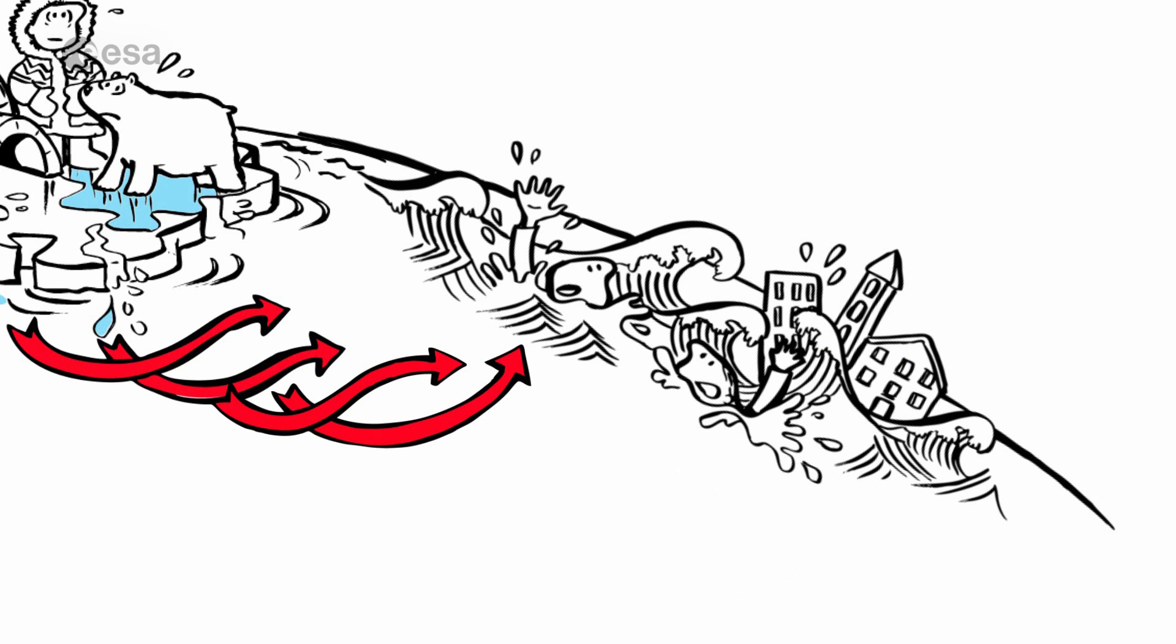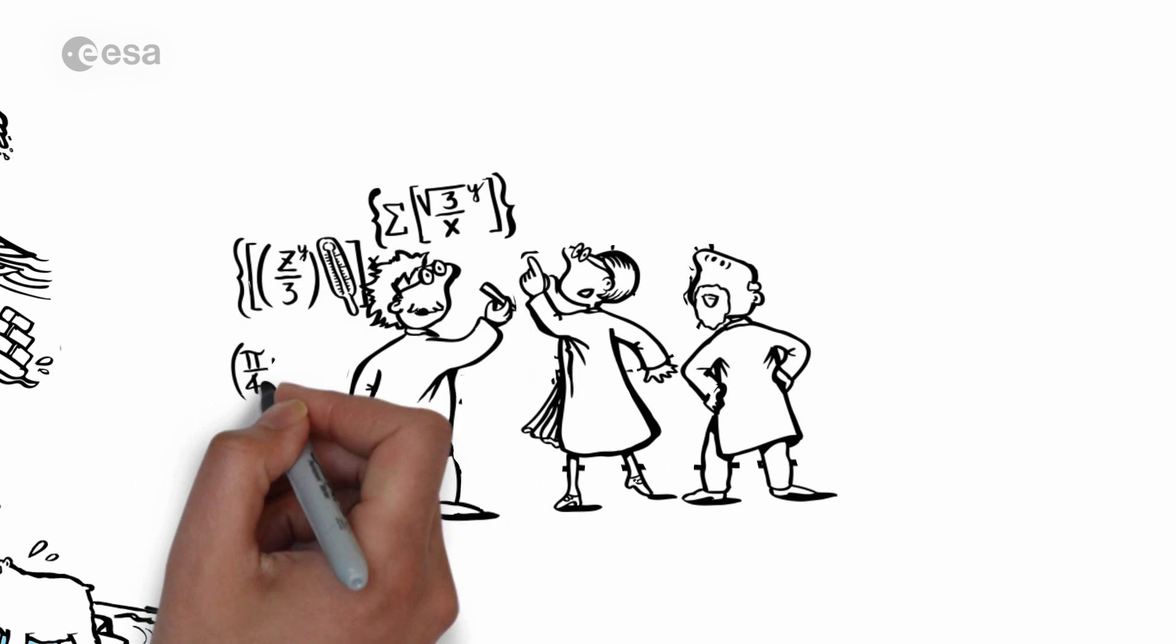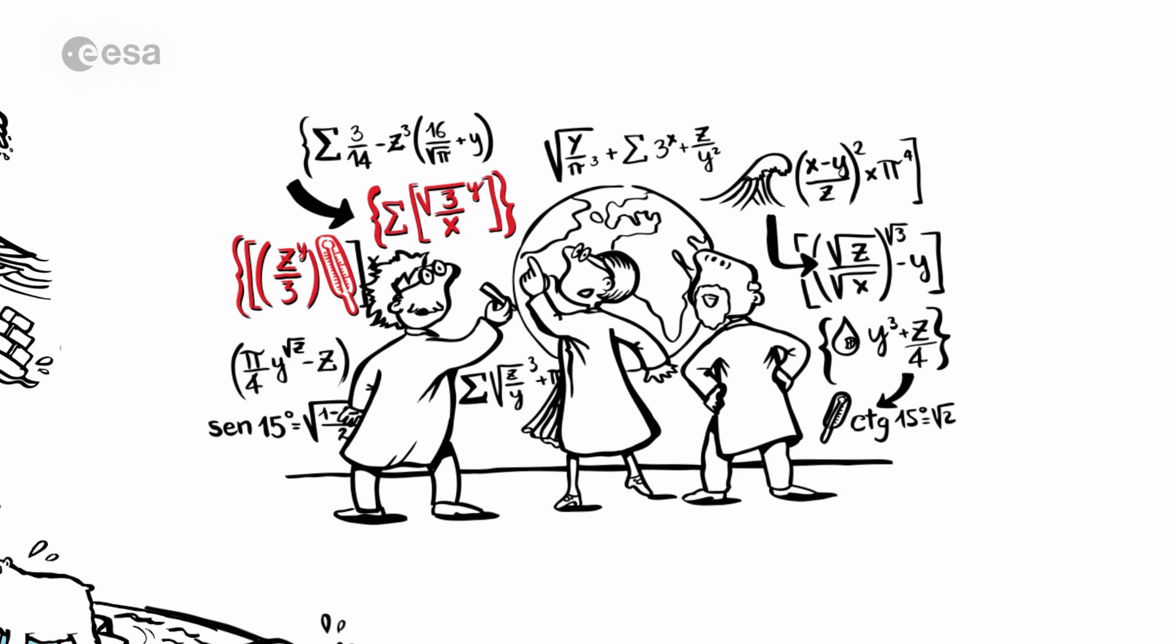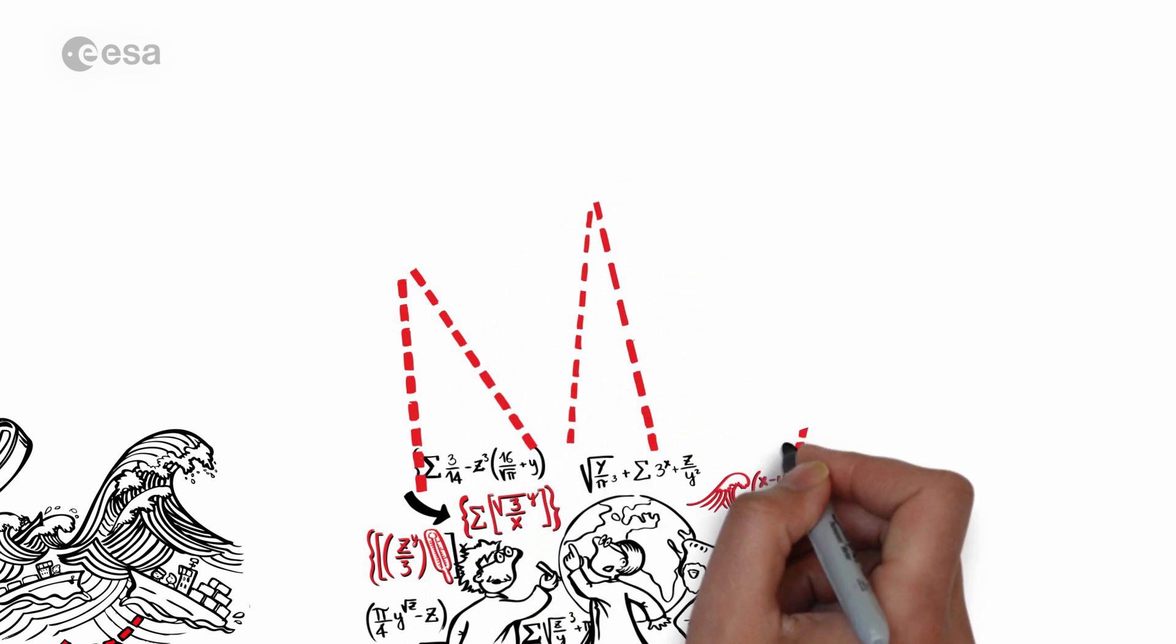If we knew more about the oceans, we'd better understand our entire planet Earth. That's why scientists have identified 50 different parameters to describe the Earth's physics. Things like air temperature, humidity, wind speed, water temperature, wave height and many more. And they've realized that half of these 50 can only be observed by satellite.